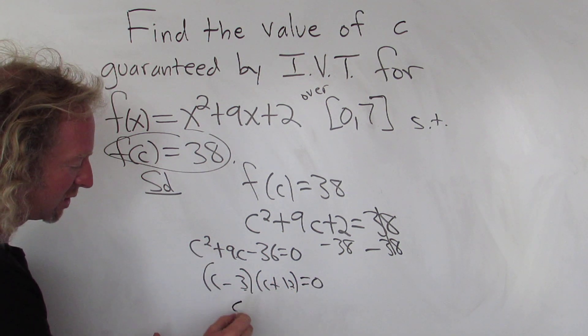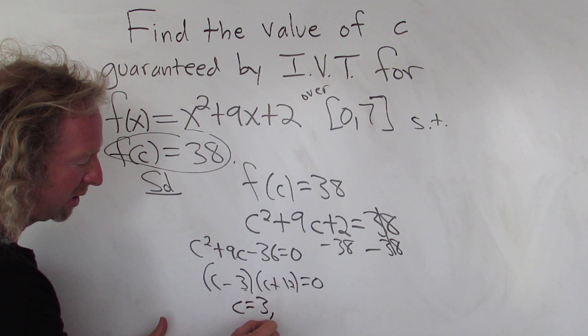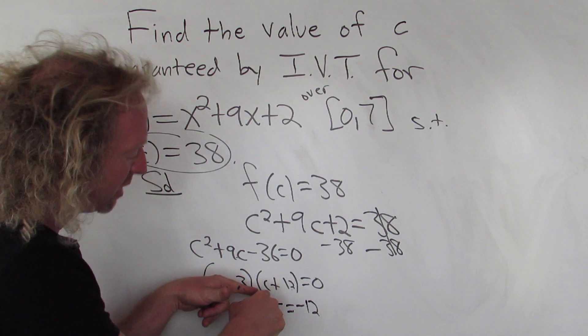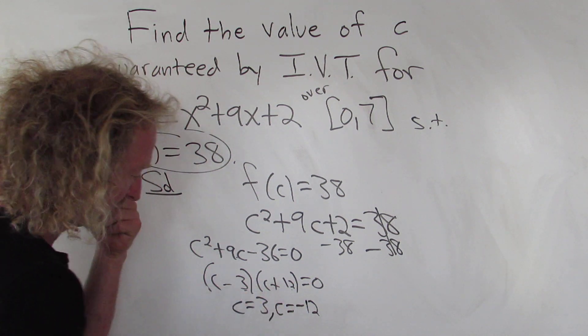So the product equal to 0, so you set each piece equal to 0, so we get 3. Then we get negative 12, right? Because you get c minus 3 equals 0, so c is 3. C plus 12 equals 0, so c is negative 12.